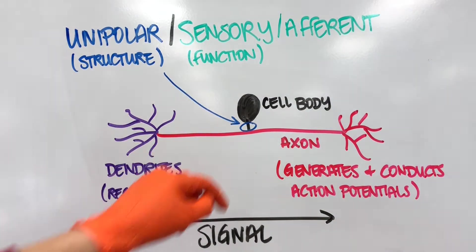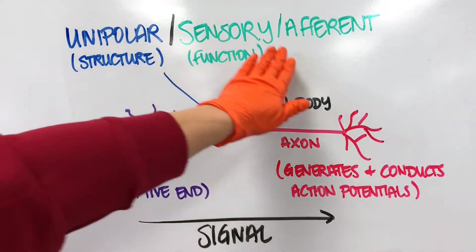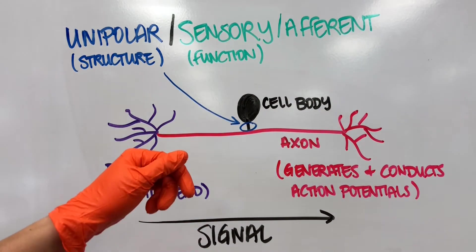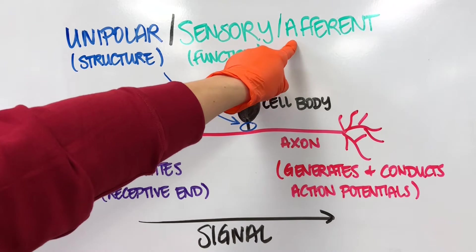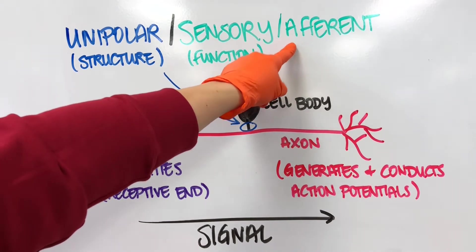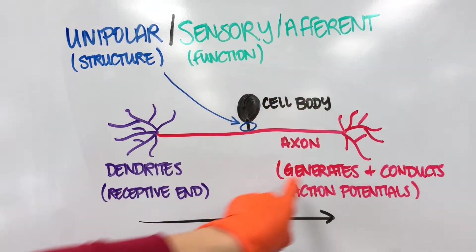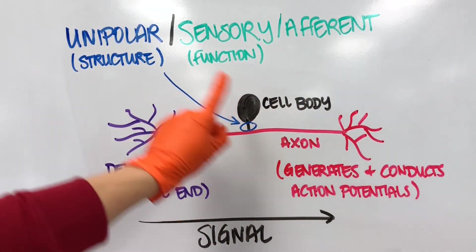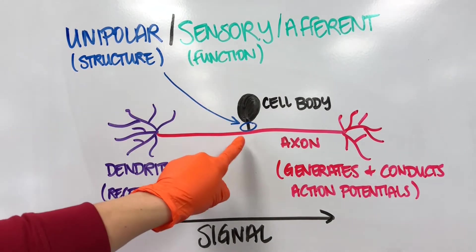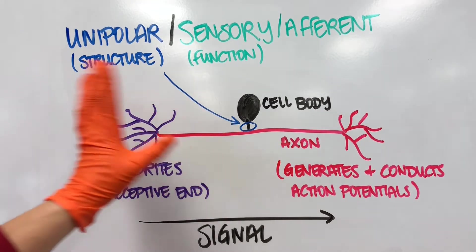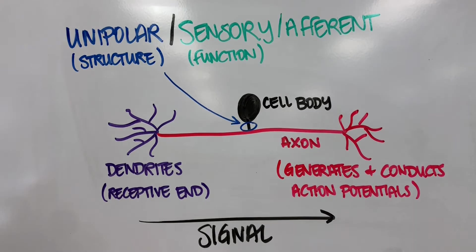Unipolar neurons serve as the sensory or afferent—or what I like to emphasize, afferent, because we have an efferent as you'll see. This is the job that this neuron has in the body. If it's sensory, which is its functional class, this neuron is responsible for bringing sensory information to the central nervous system.